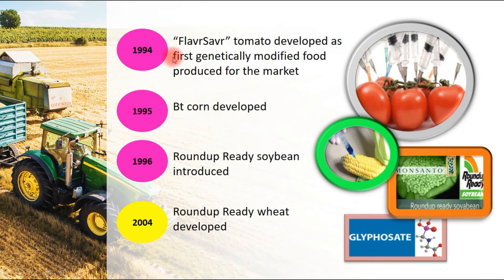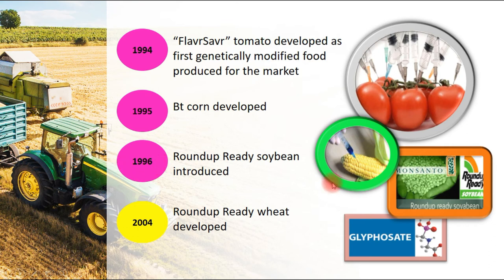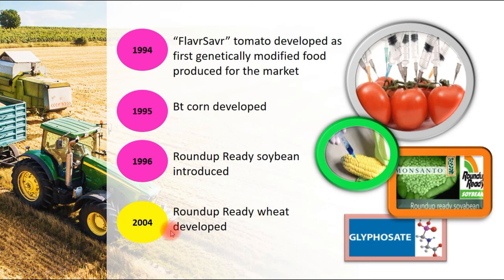In 1994, the Flavr Savr tomato was developed as the first genetically modified food produced for the market. In 1995, Bt corn was developed. In 1996, Roundup Ready soybean was introduced. In 2004, another Roundup Ready crop was developed.